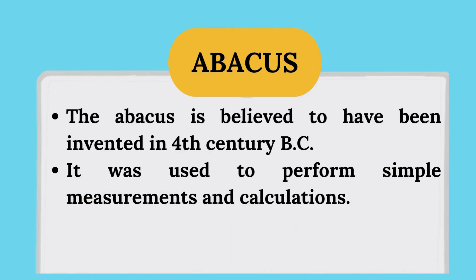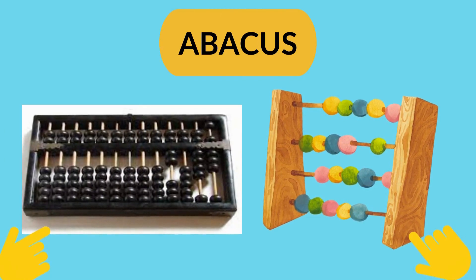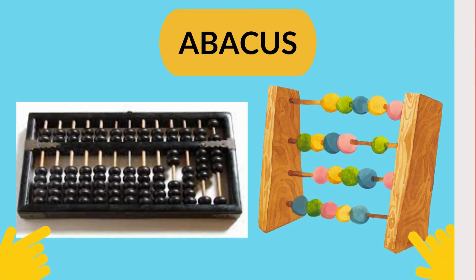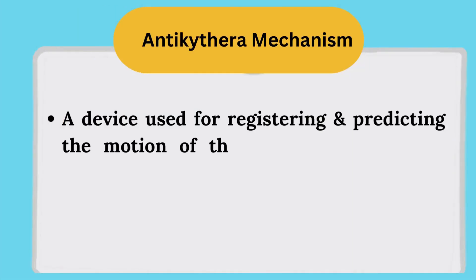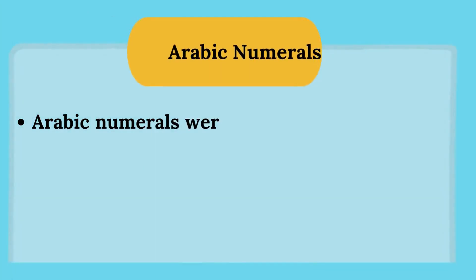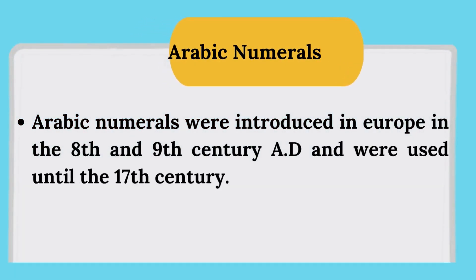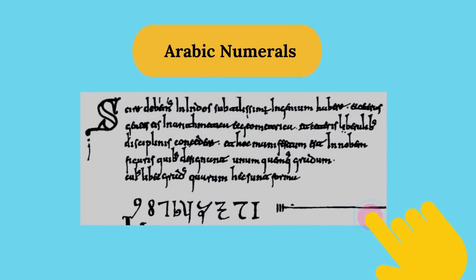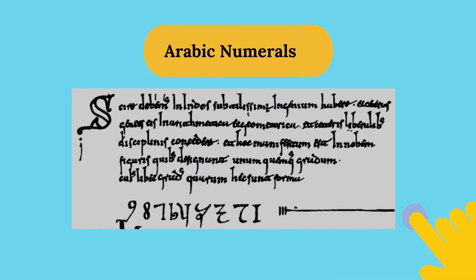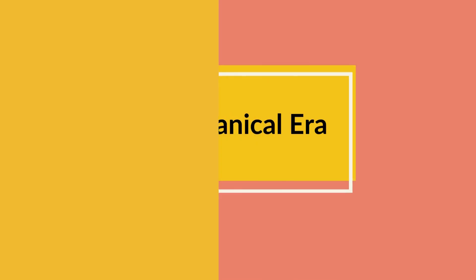The abacus is believed to have been invented in the fourth century BC and was used to perform calculations. Next is the Antikythera mechanism, used for registering and predicting the motion of stars and planets, dated to the first century BC. Arabic numerals were introduced in Europe in the 8th and 9th century AD and were used until the 17th century. This concludes the prehistory section.